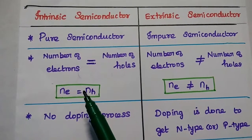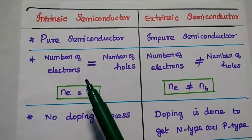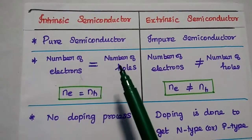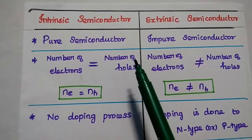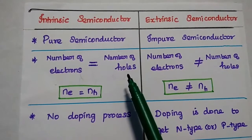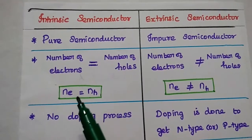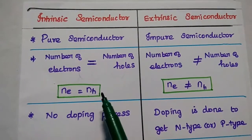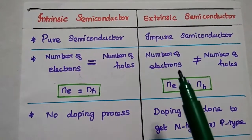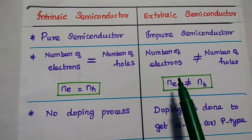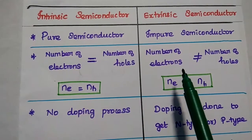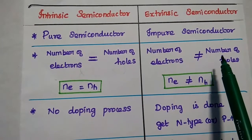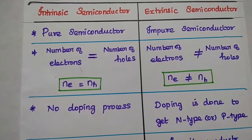In intrinsic semiconductor, the number of electrons in conduction band is equal to the number of holes in the valence band — that is, Ne is equal to Nh. But for extrinsic semiconductor, the number of electrons is not equal to number of holes.